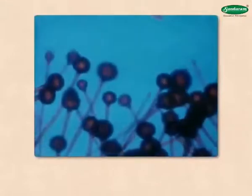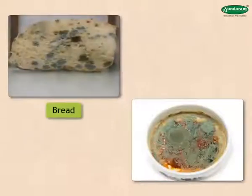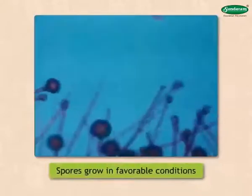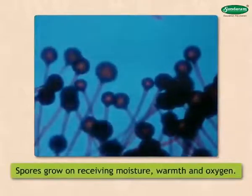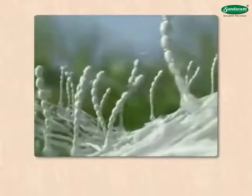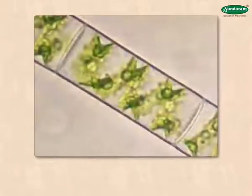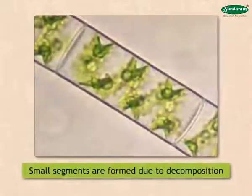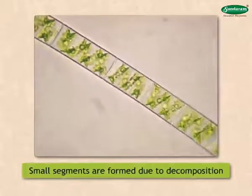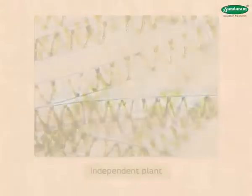Reproduction from spores is called sporogenesis. You must have seen the fungus that grows on bread or pickles. Spores begin to grow when they find favourable conditions — that is, when they get enough moisture, warmth, and oxygen. From each spore, a new plant is grown. Another means of asexual reproduction is through segmentation. In algae like spirogyra, small pieces or segments are formed due to decomposition or some other reason, and from every segment an independent plant grows.